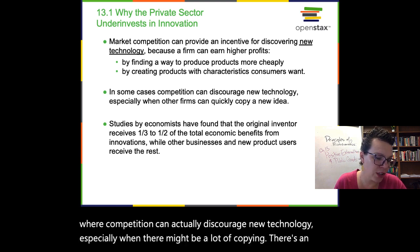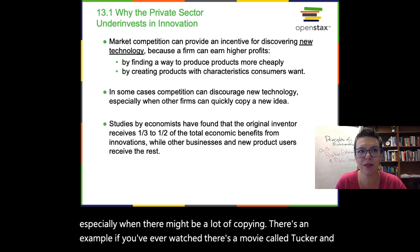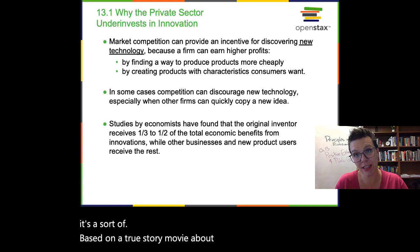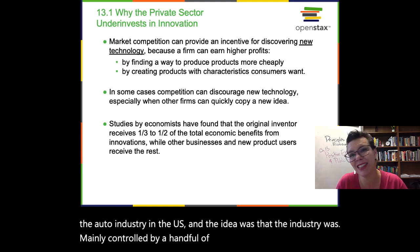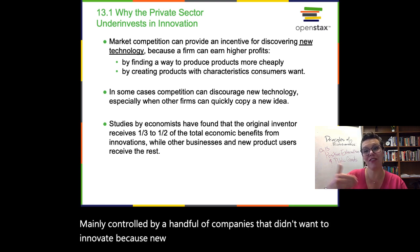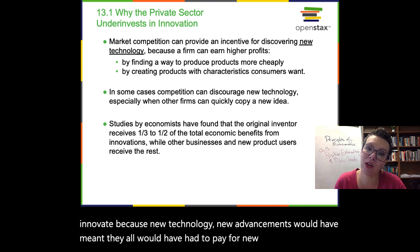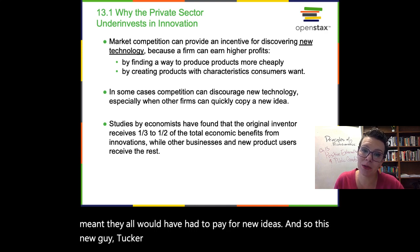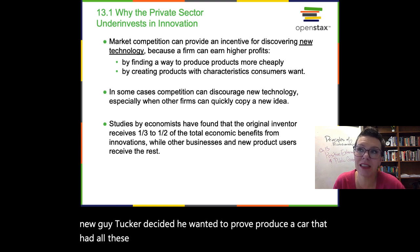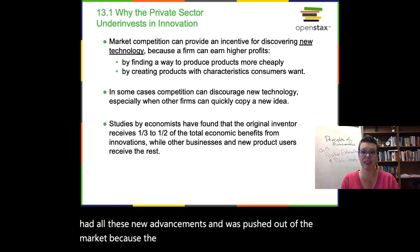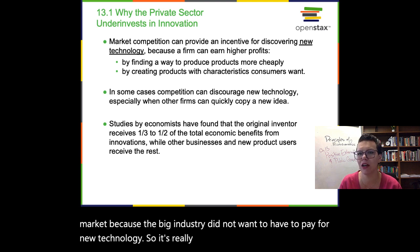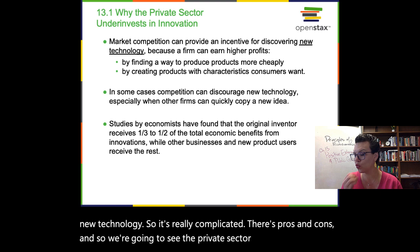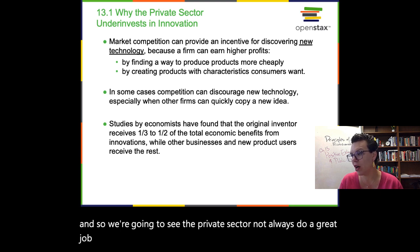There's a movie called Tucker — based on a true story about technological advancement in the auto industry in the U.S. The idea was that the industry was mainly controlled by a handful of companies that didn't want to innovate, because new technology would have meant they all would have had to pay for new ideas. This new guy Tucker decided he wanted to produce a car with all these new advancements and was pushed out of the market because the big industry did not want to pay for new technology. So it's really complicated — there are pros and cons — and we're going to see the private sector not always do a great job of producing innovation.